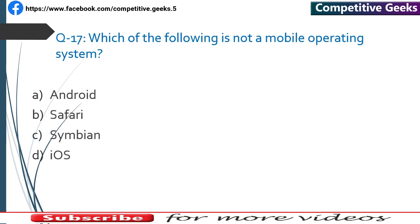Number 17: Which of the following is not a mobile operating system? Android, Symbian, and iOS are mobile operating systems. ATNU is not a mobile operating system.